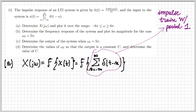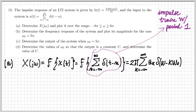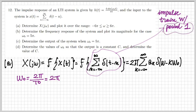The period is one. For a periodic signal, the Fourier transform is given by 2π times the sum of aₖ · δ(ω − k·ω₀). So I need to determine the fundamental frequency ω₀ and the coefficients aₖ. The frequency is 2π over T₀, and since T₀ equals one, ω₀ equals 2π. The formula for the Fourier series coefficients is one over the period times the integral over one period of the signal times e^{-jkω₀t} dt.